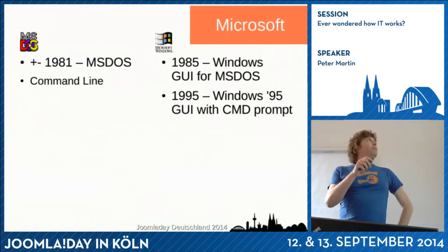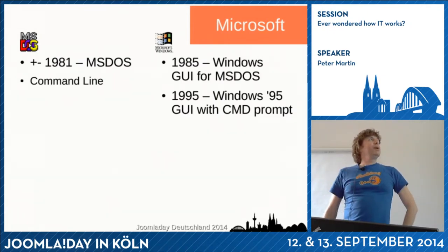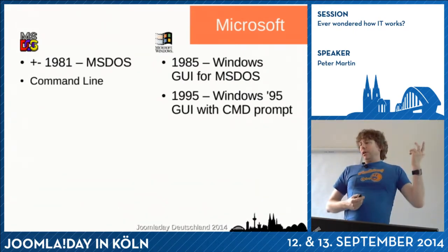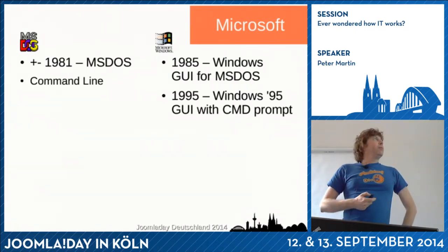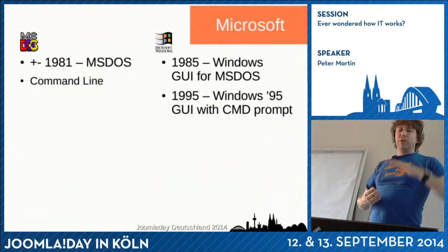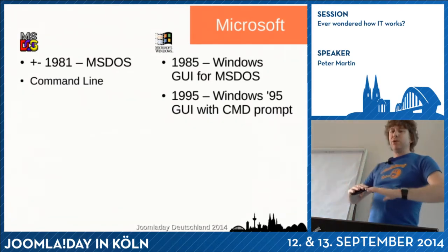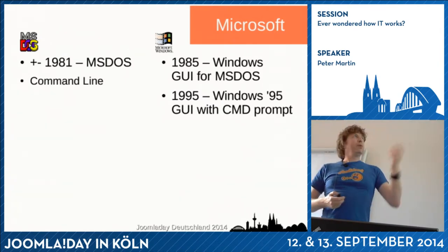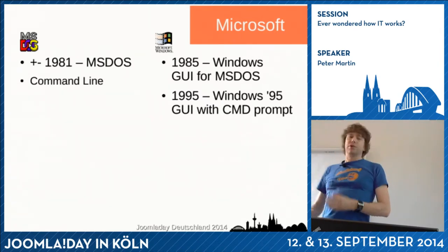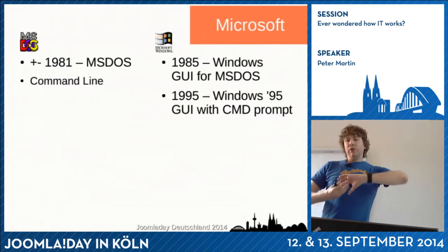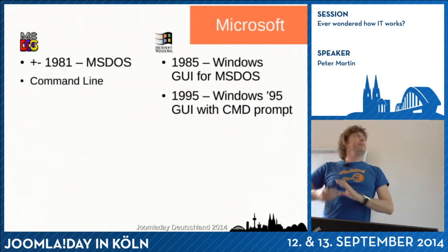Microsoft came with MS-DOS. It was used for the first IBM-compatible computers, and in 1985 they launched Windows. Windows was first just a GUI on top of MS-DOS. From 1995 they developed Windows 95 and all the newer variants, and those are a real operating system with the GUI built in.